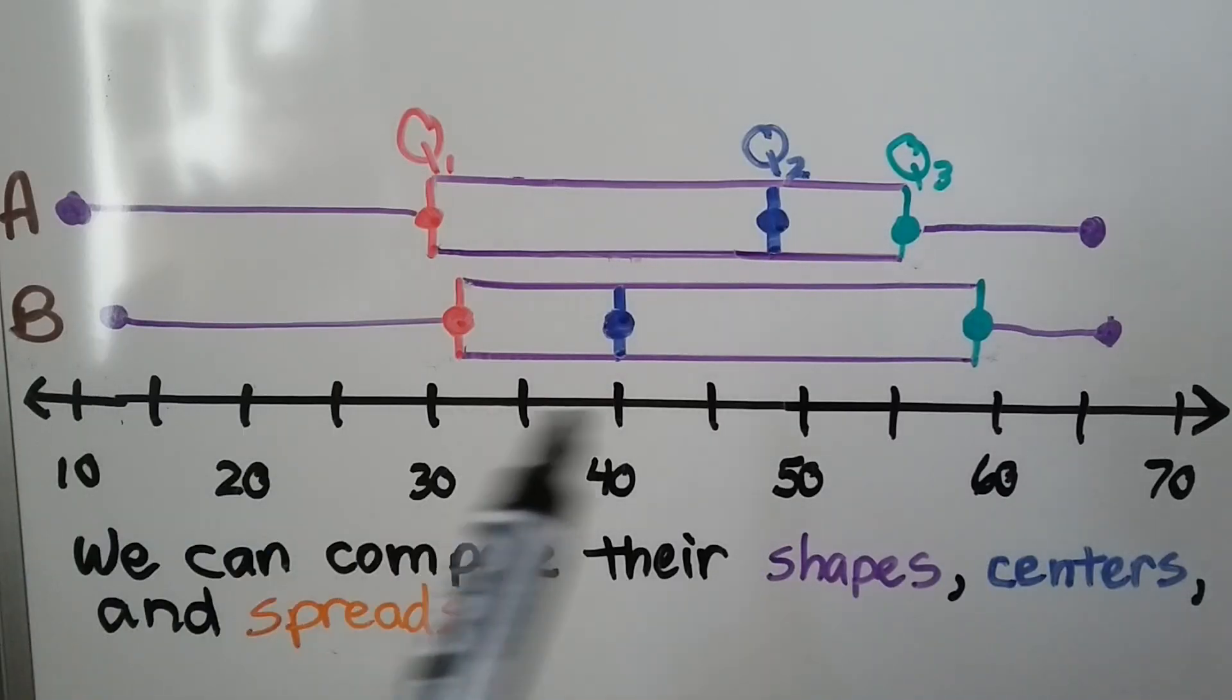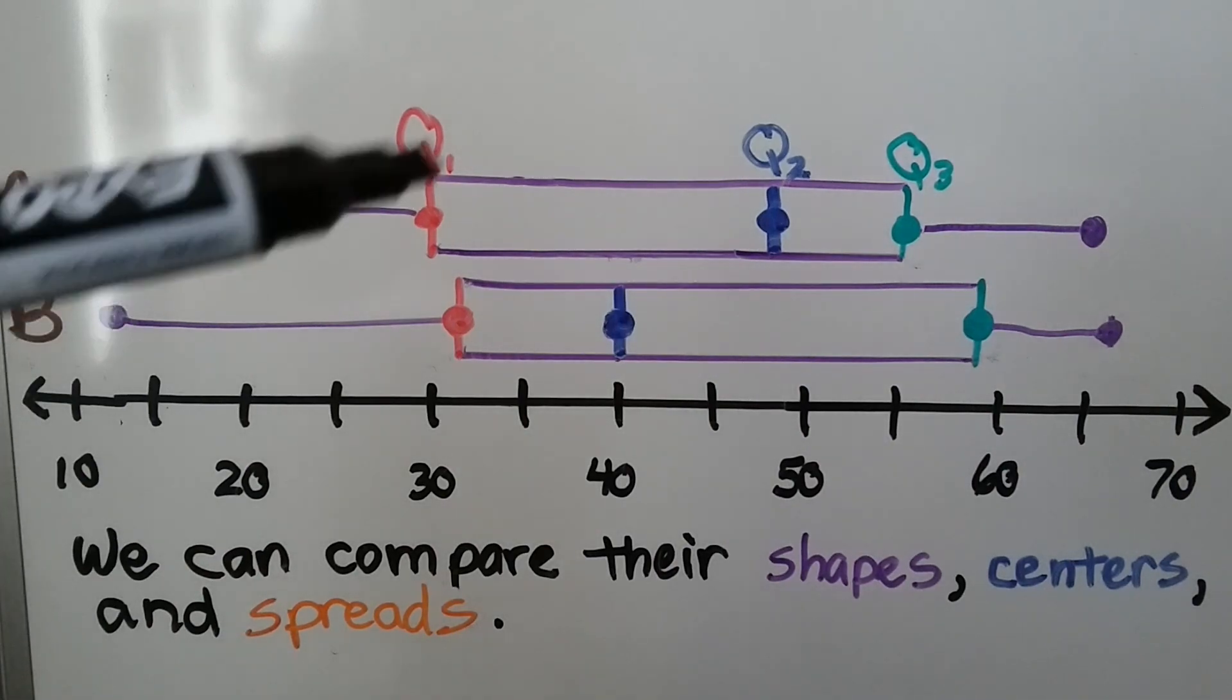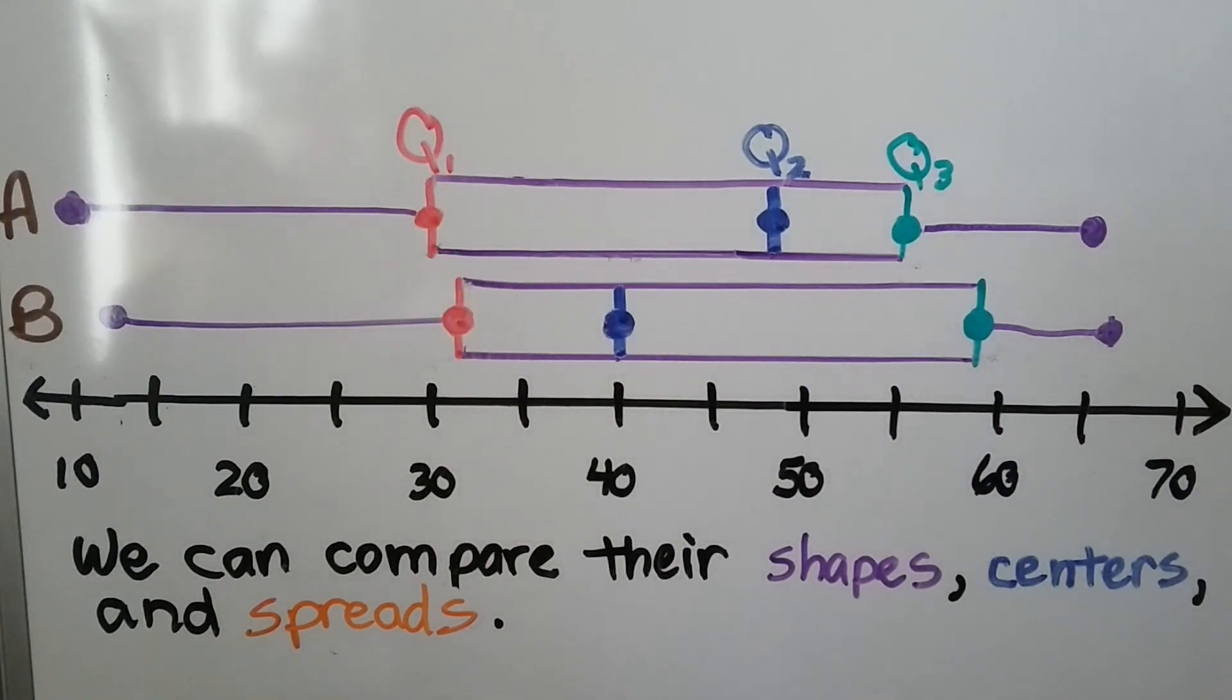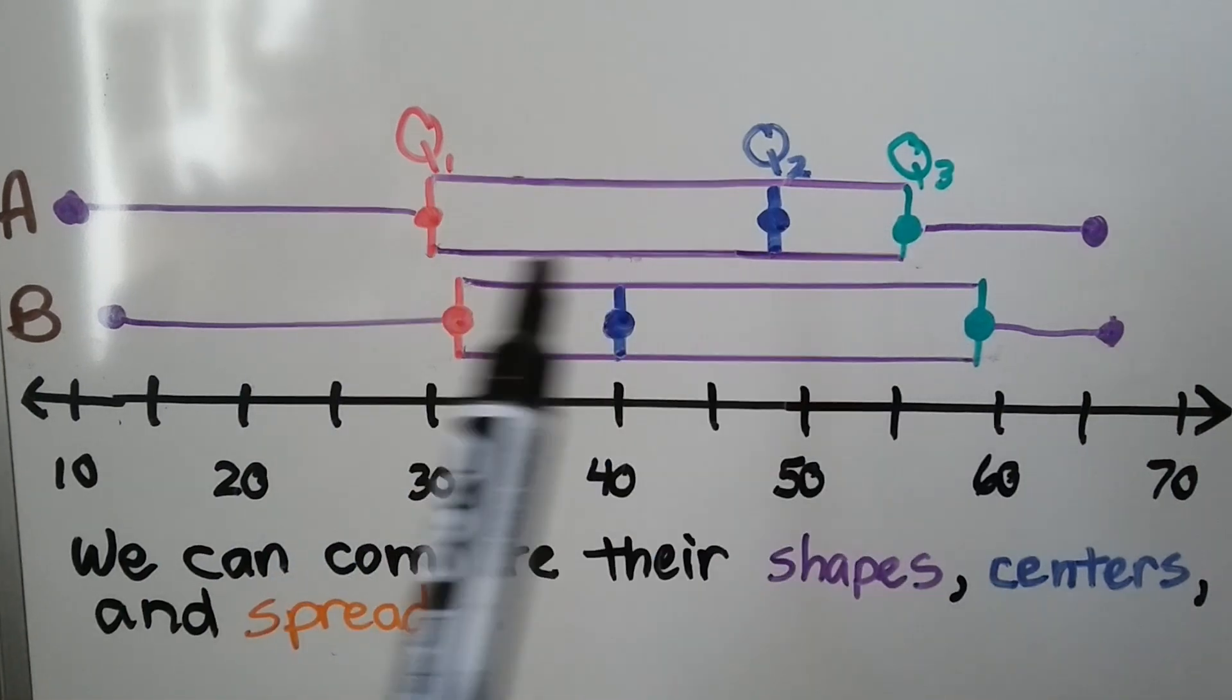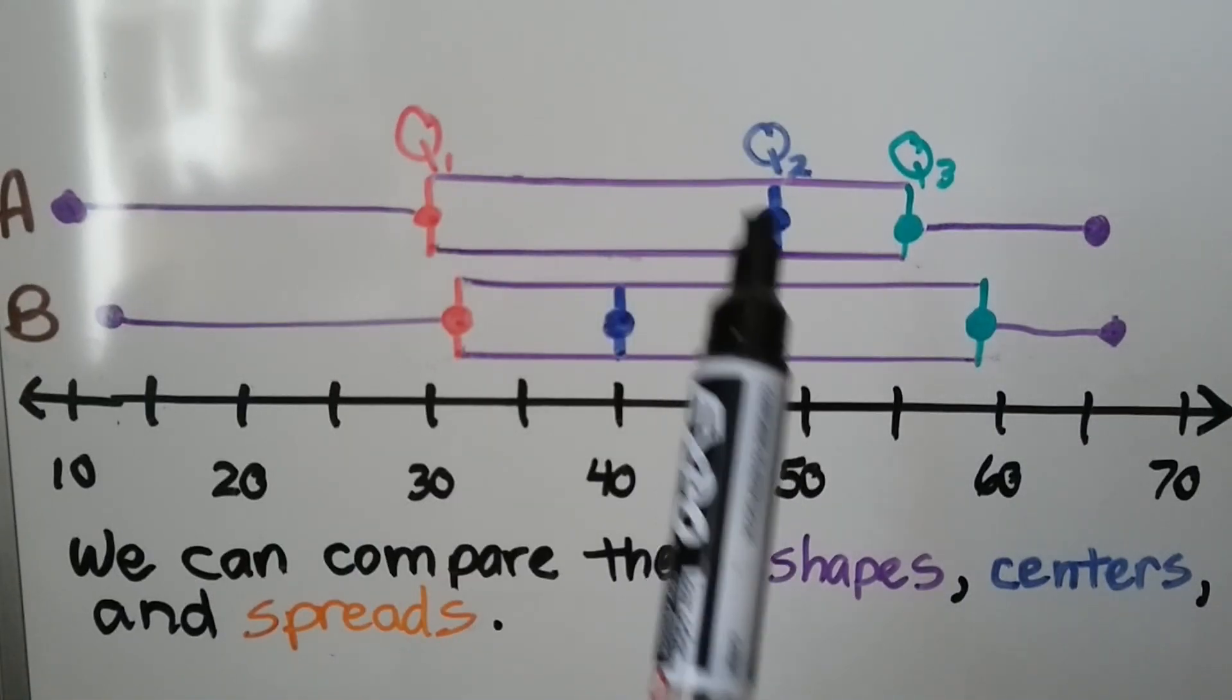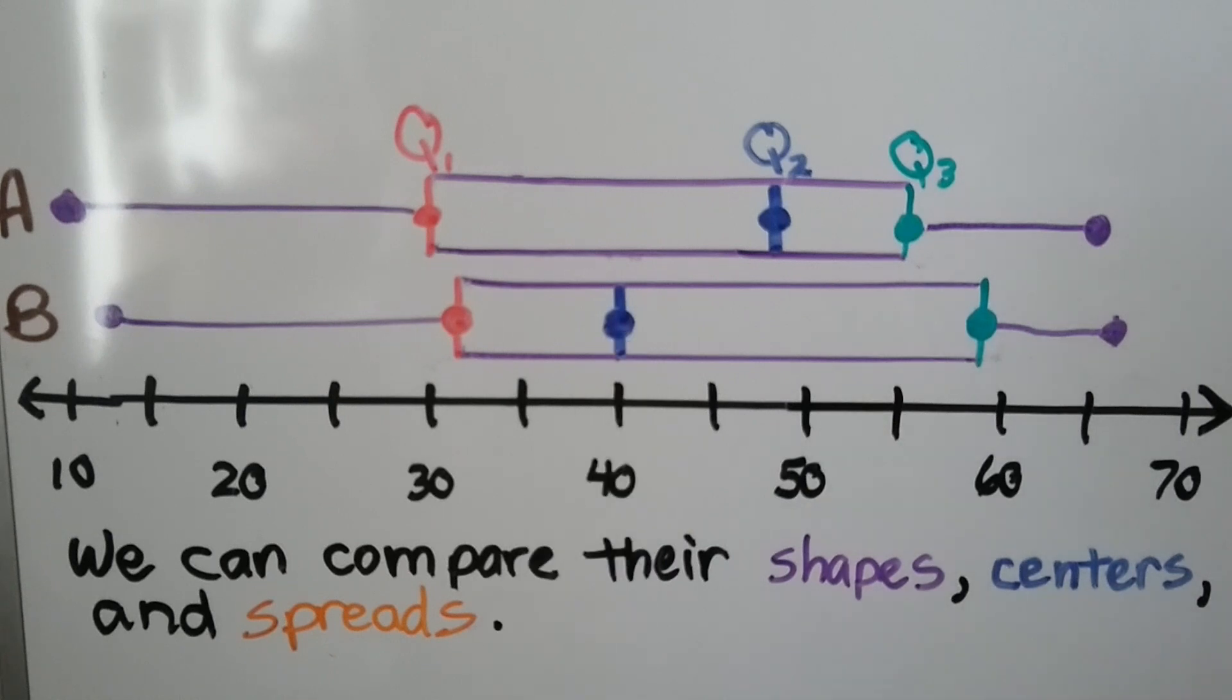So here we have our number line in increments of 10. We have two box plots, and we can compare their shapes, their centers. This one's center is here, this one's center is here. And we can compare their spreads, the length of their boxes.